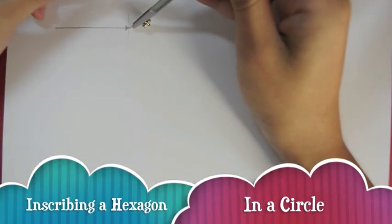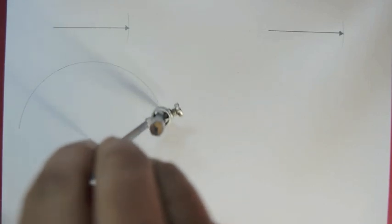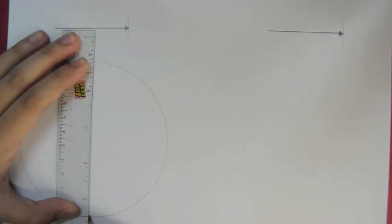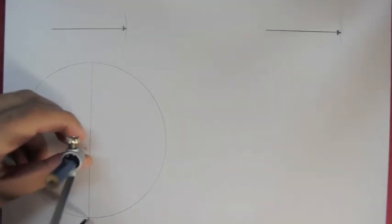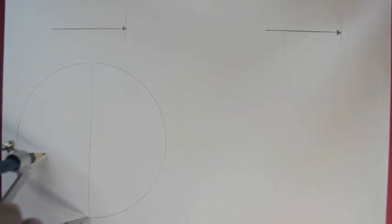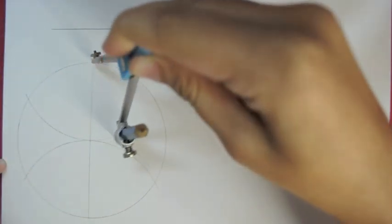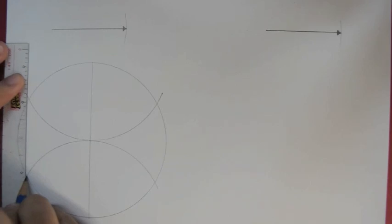Inscribing a hexagon in a circle. Construct your circle using the given radius. Draw two diameters from any point. Using the radius, strike the circle at one end point of the diameter. Do the same for the other end point. Trace your points to construct your hexagon.